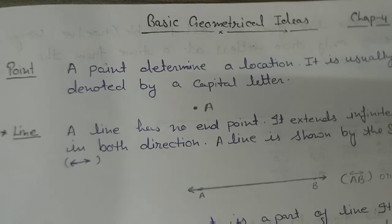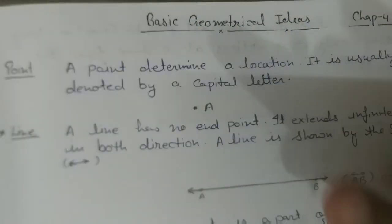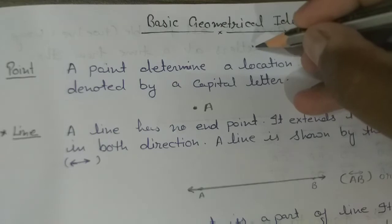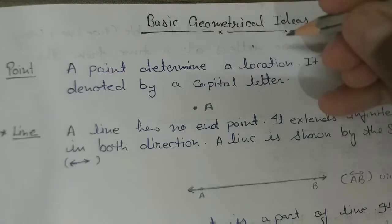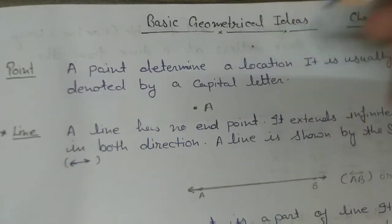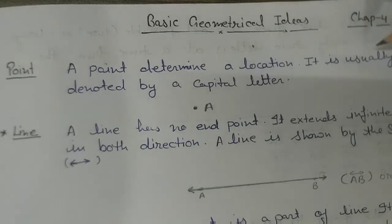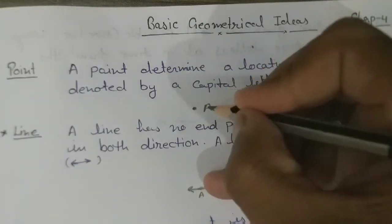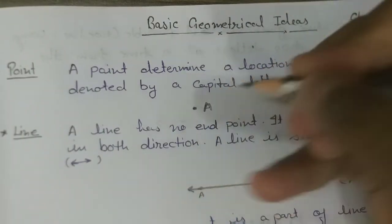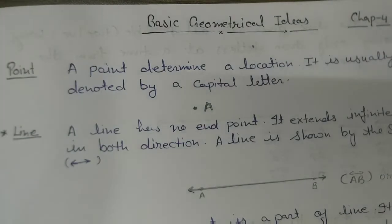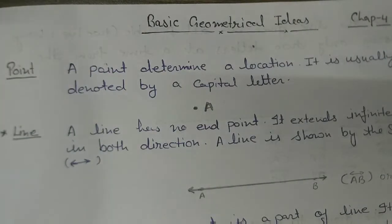A point determines a location. That means a point shows a perfect location on a plane. Like if you have a paper and you make a dot here, that is a perfect location. A point is usually denoted by a capital letter. When we show a point in geometry, we write a capital letter — Point A, Point B, Point C. This is an exact location.